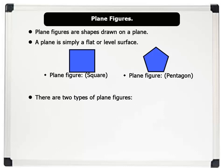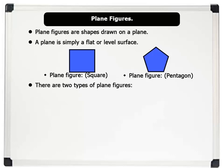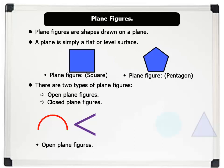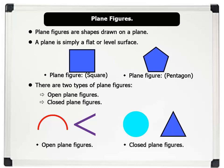Now, there are 2 types of plane figures, namely: open plane figures and closed plane figures. A semicircle and a less-than sign are examples of open plane figures, while a circle and a triangle are examples of closed plane figures. Now let us see other examples of closed plane figures, such as polygons.